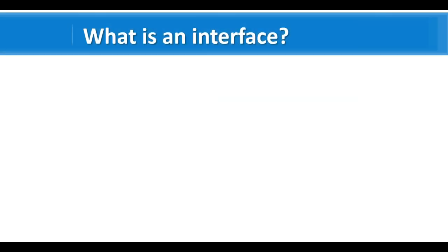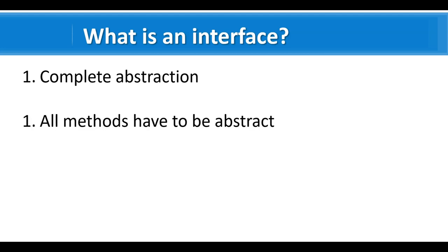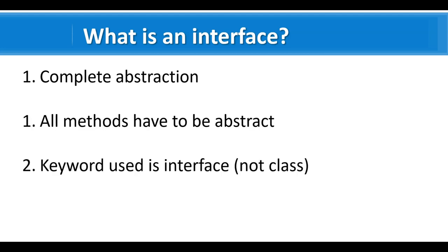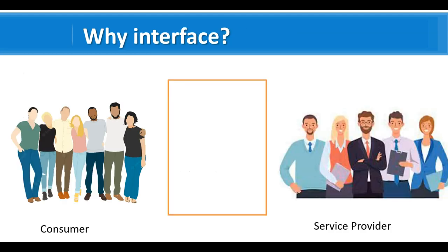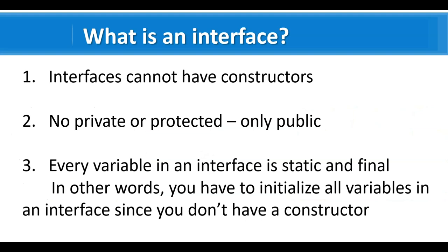To summarize: we saw what an interface is and how it provides complete abstraction, why all methods have to be abstract, and how to implement an interface. We also covered key points — interfaces cannot have constructors, cannot be instantiated, cannot have private or protected methods, and every variable created within an interface is static and final. We also saw what multiple inheritance is, why it cannot be implemented with normal classes, and why it works with interfaces. Thank you — if you have any comments, you can add them to the comments section.